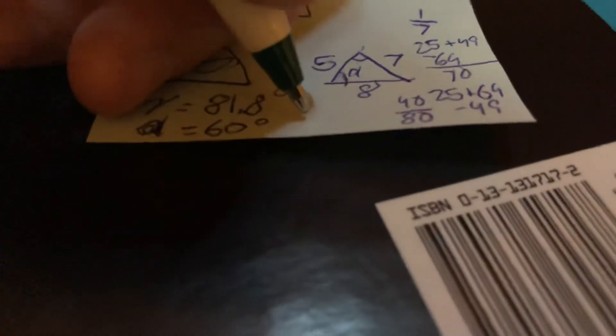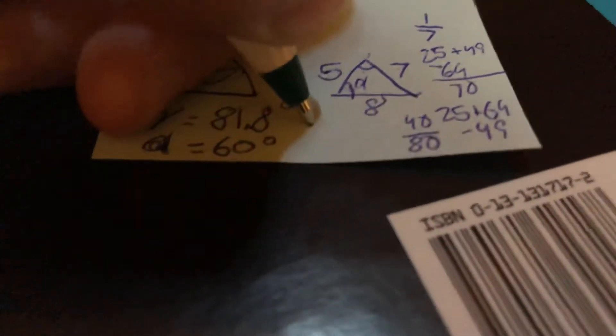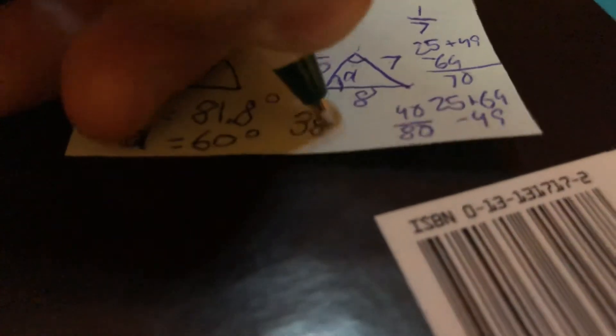Then we could do the same thing to find this last angle, but the last angle is just going to be 180 minus 60 minus 81.8, which is going to be... I'll give you moments to think about this one. I would be really happy with you if you got 38.2 degrees.